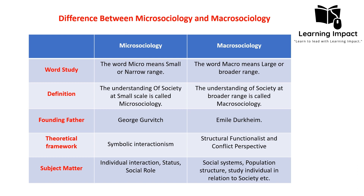Regarding subject matter, micro sociology focuses on individual interaction — how individuals interact within smaller social units — and also studies individual status and individual social roles in society. In macro sociology, which has a broader range, the subject matter includes social systems, social institutions, and population structure. It also studies individuals, but in relation to society — how individuals are impacted by society and how they impact it — whereas micro sociology focuses on individual interaction in isolation.